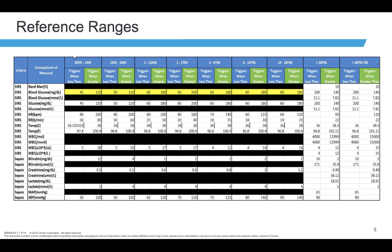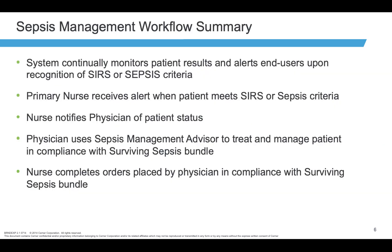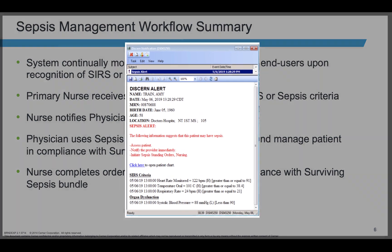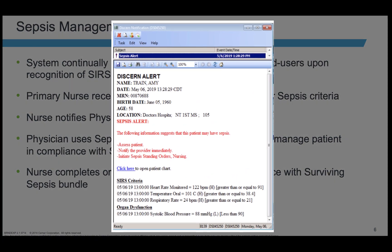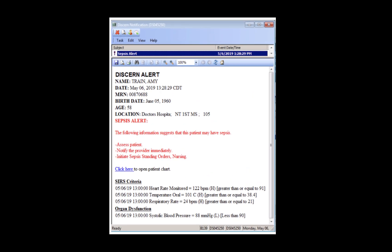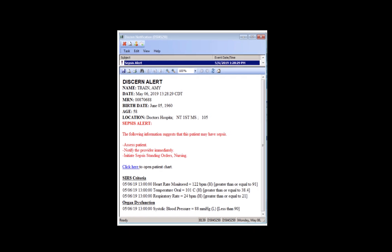The nurse assesses the patient, then notifies the physician of the patient status. When criteria is met, the system will fire a discern alert to the nurse having an active relationship with the patient. The alert will fire to the nurse even if they are not in the same patient's chart.